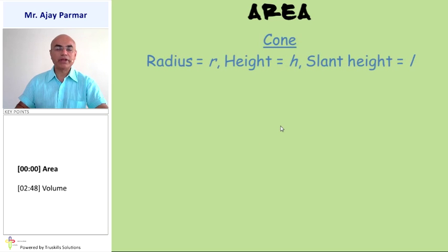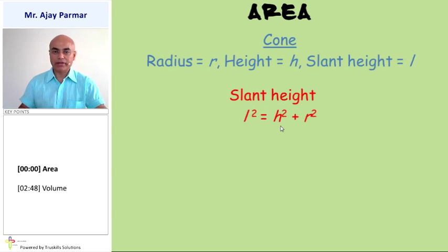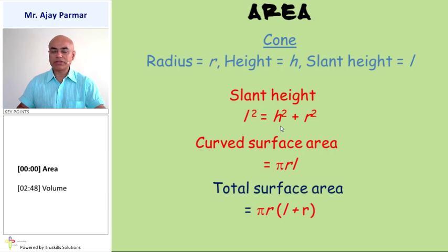Cone, if the radius, height and slant height are represented by R, H and L, then slant height can be found out by using L square is equal to H square plus R square, similar to that of a Pythagorean triplet. Curved surface area of the cone will be pi RL. Whereas the total surface area of the cone would be pi R into bracket L plus R because along with the curved surface area, it will include the surface area of the bottom which is circle in shape.